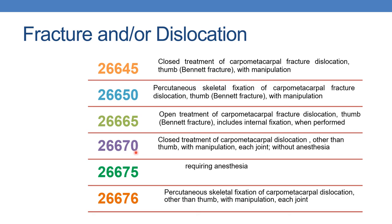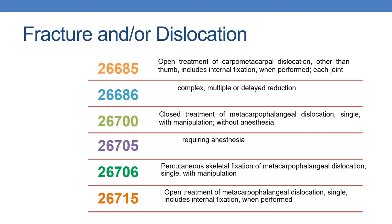Next CPT is 26670: closed treatment of carpometacarpal dislocation, other than thumb. With anesthesia is reported with 26675. The next is 26676: closed treatment of carpometacarpal dislocation, other than thumb, with manipulation, each joint. The next CPT is 26685: open treatment of carpometacarpal dislocation, other than thumb, including internal fixation. Whenever the fracture or dislocation is complex, multiple, or delayed reductions are performed, report 26686.